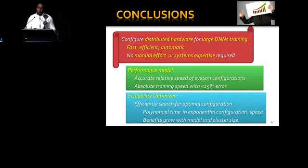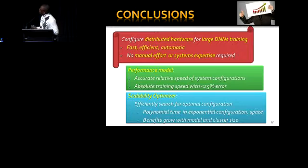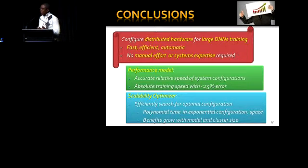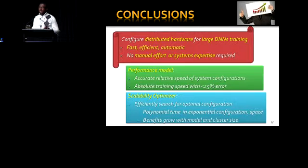Before concluding, convergence is not an issue here — it's a function of hyperparameter settings. Our interest is how quickly you can iterate over the training data. In conclusion, the presented system enables deep learning experts to use distributed hardware efficiently for large-scale training, coming up with good configurations without expensive experiments or requiring distributed systems expertise. The solution has two components: a performance model estimating iteration time using different parallelism forms, and a scalability optimizer that efficiently explores the exponential configuration space in polynomial time.